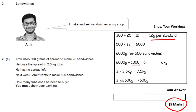As you can see at the bottom I've also given it in grams, but you want to show that you can convert between units within the system — from grams to kilograms. So what he would need is three tubs: three times 2.5 kilograms. He's going to have 1.5 kilograms left over. The answer is: Amir needs to purchase three tubs.